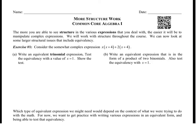Consider the somewhat complex expression: X times X plus 4, plus 2 times X plus 4. Write an equivalent trinomial expression and then test the equivalency with the value of X equals 1. So we're going to have our original expression of X times X plus 4, plus 2 times X plus 4. What we need to do first is the distributive property.